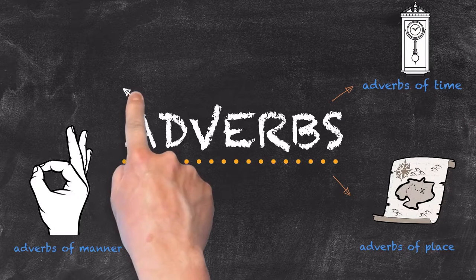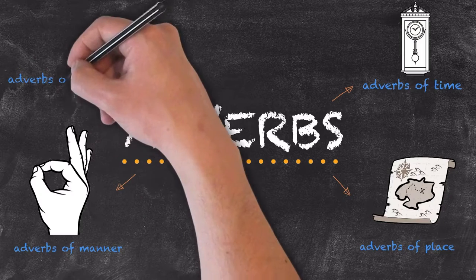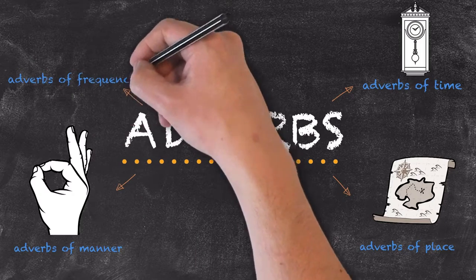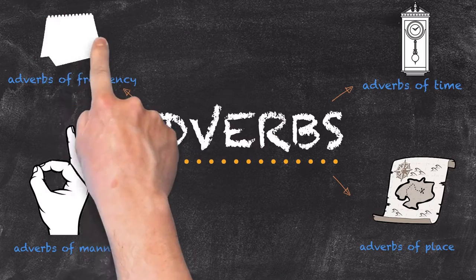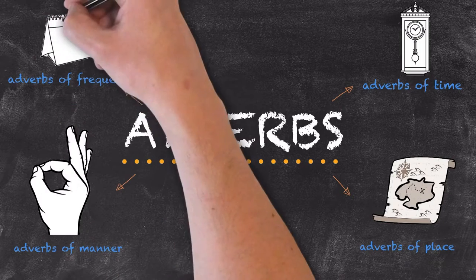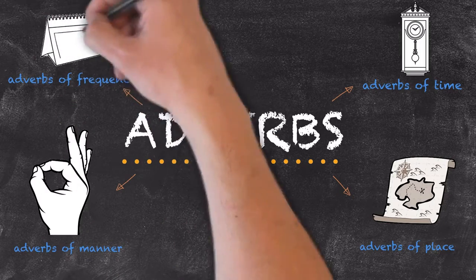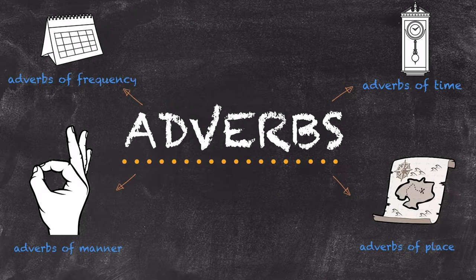Finally, we have our adverbs of frequency, telling us how often the action happens. Two examples being often or never.